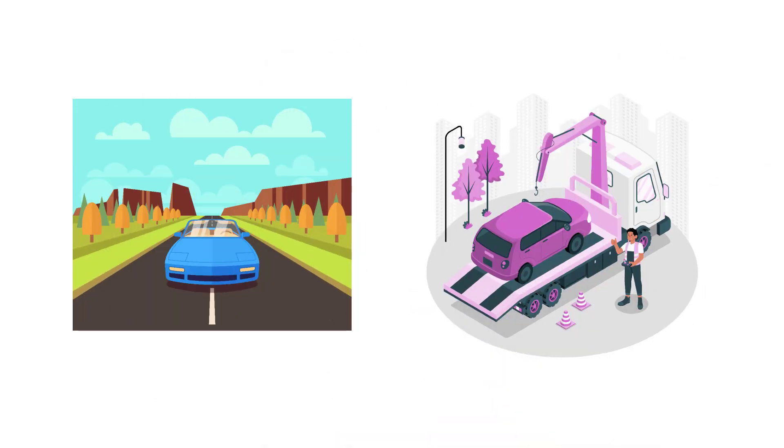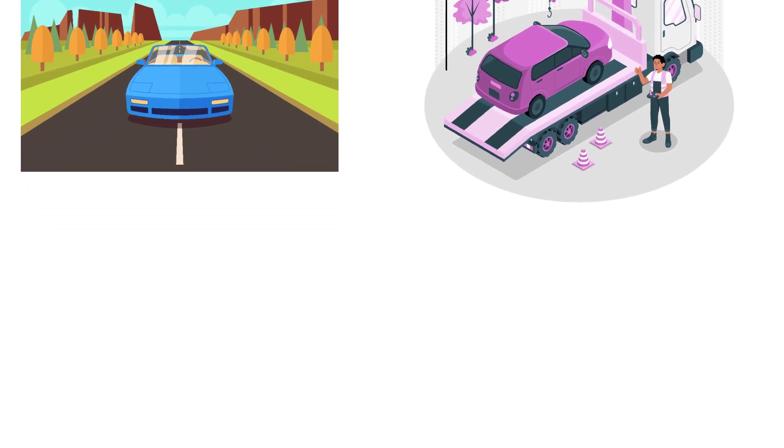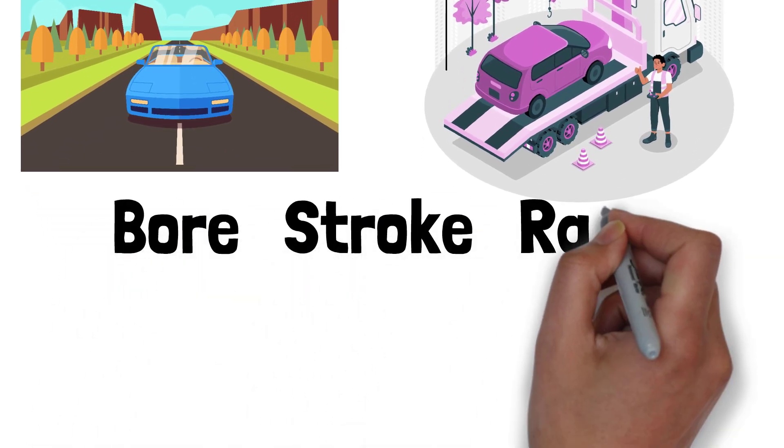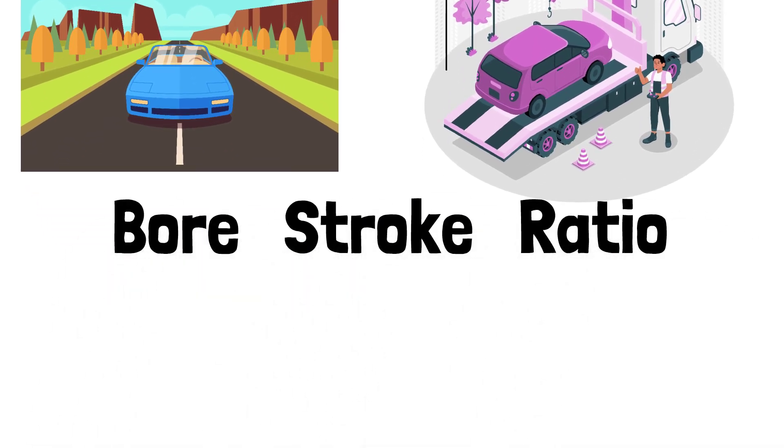Why some cars scream down the highway while others are built to pull heavy loads with ease? The secret often lies in something called the bore-stroke ratio. Want to know how it works and why it matters? Stick around. I'll make it crystal clear.